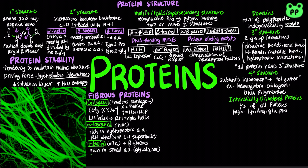Lastly, elastin is a key protein of the extracellular matrix, which allows many tissues in the body to resume their shape after stretching or contracting. It consists of lysine cross-linked by adenosine and lysine or leucine.